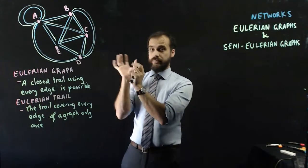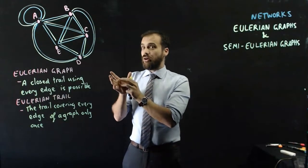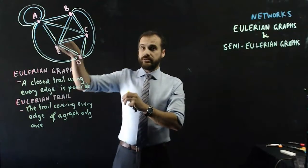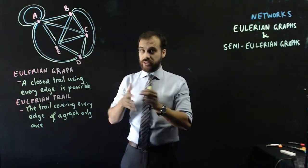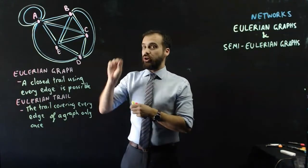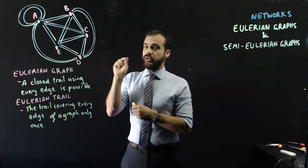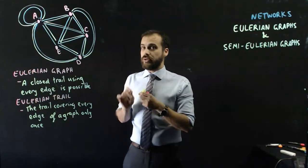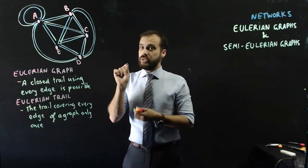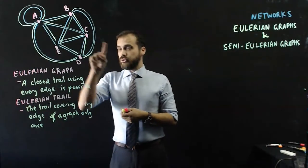Now I'll let you in on a secret. When I drew this network before we started I hadn't created my Eulerian trail yet. Like the first time I did it was in front of you, but when I created it I knew there was an Eulerian graph. Now how did I know that it was an Eulerian graph?